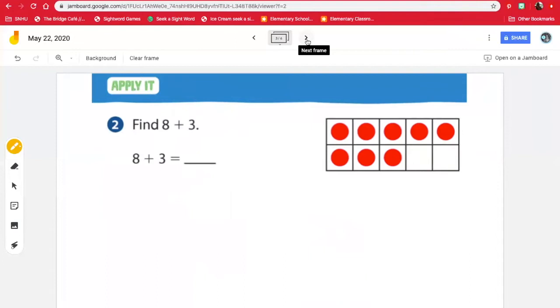Find 8 plus 3. And I see here it wants us to use the 10 frame. So I see that there are 5, 6, 7, 8 in red. So let's use blue to draw the other 3. Remember, we want to make a 10 first. So we have 1, 2, 3. And here it shows that we have one 10. So we have 10, and how many left over? One.